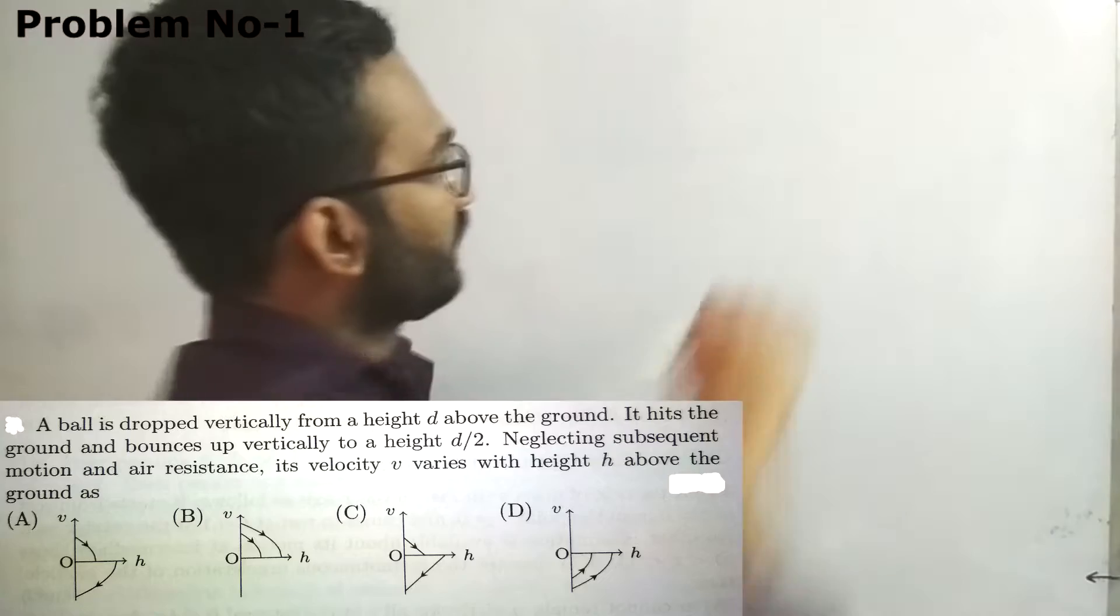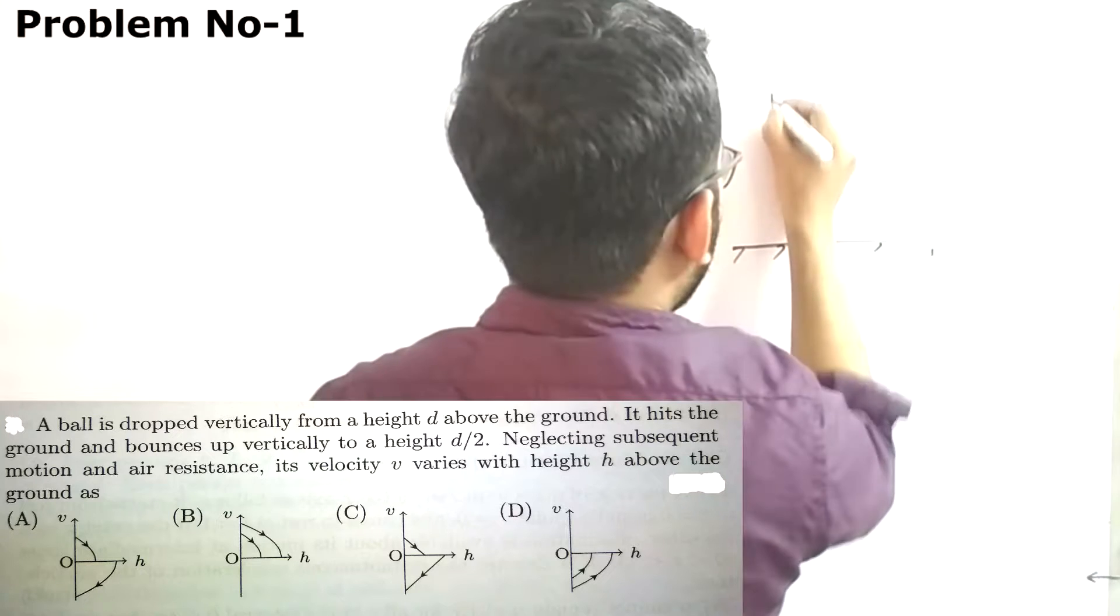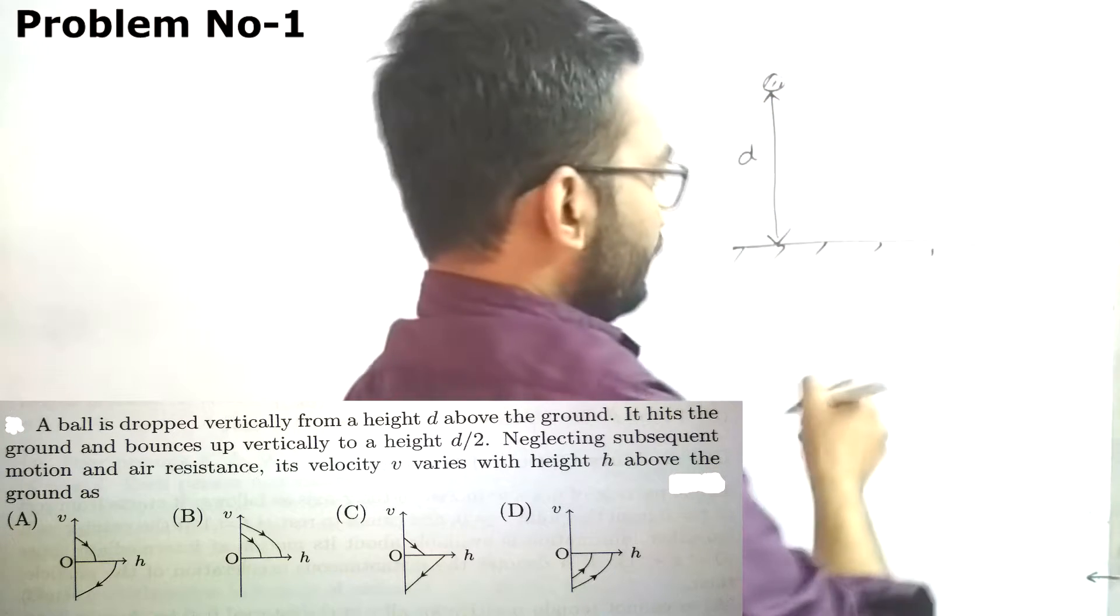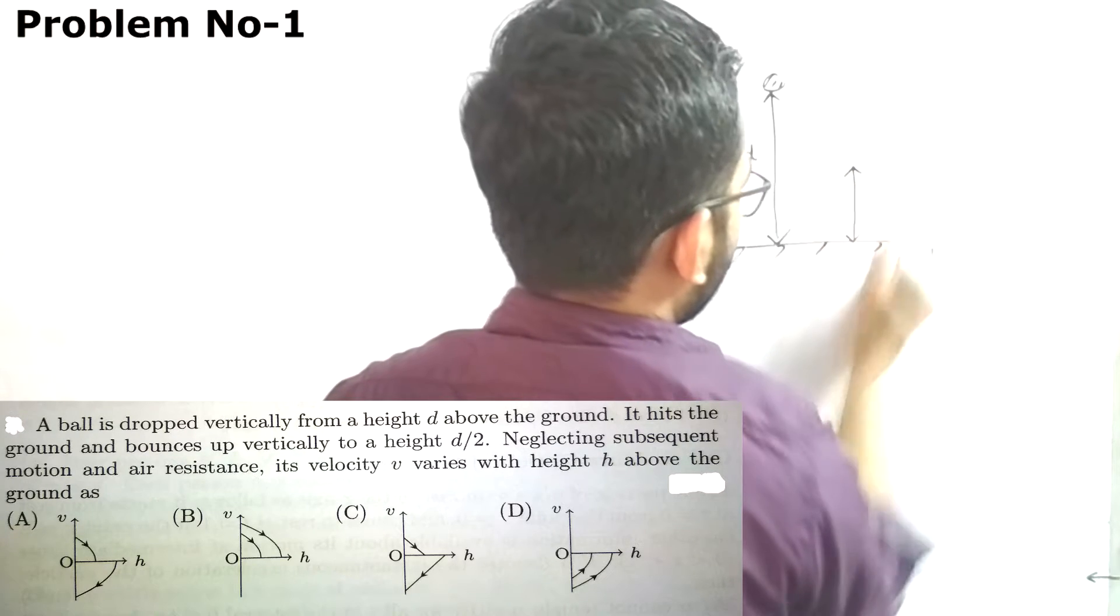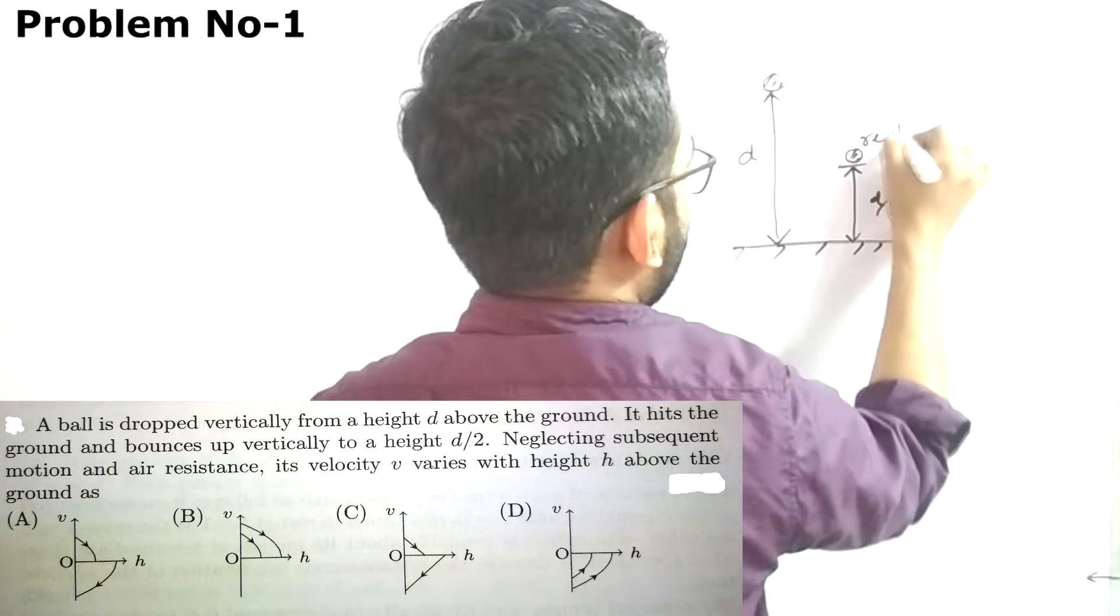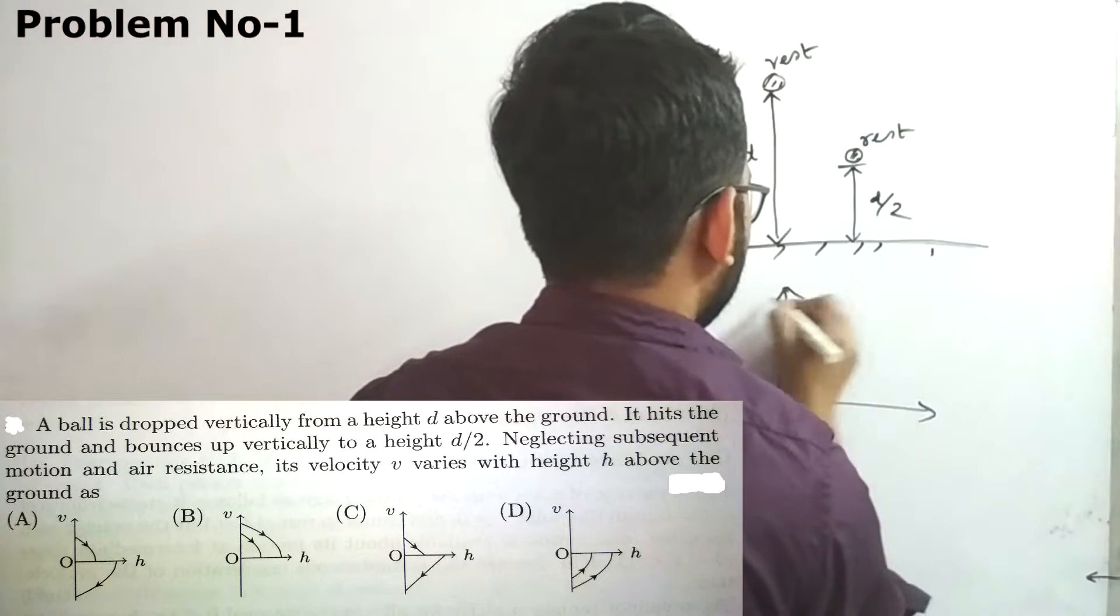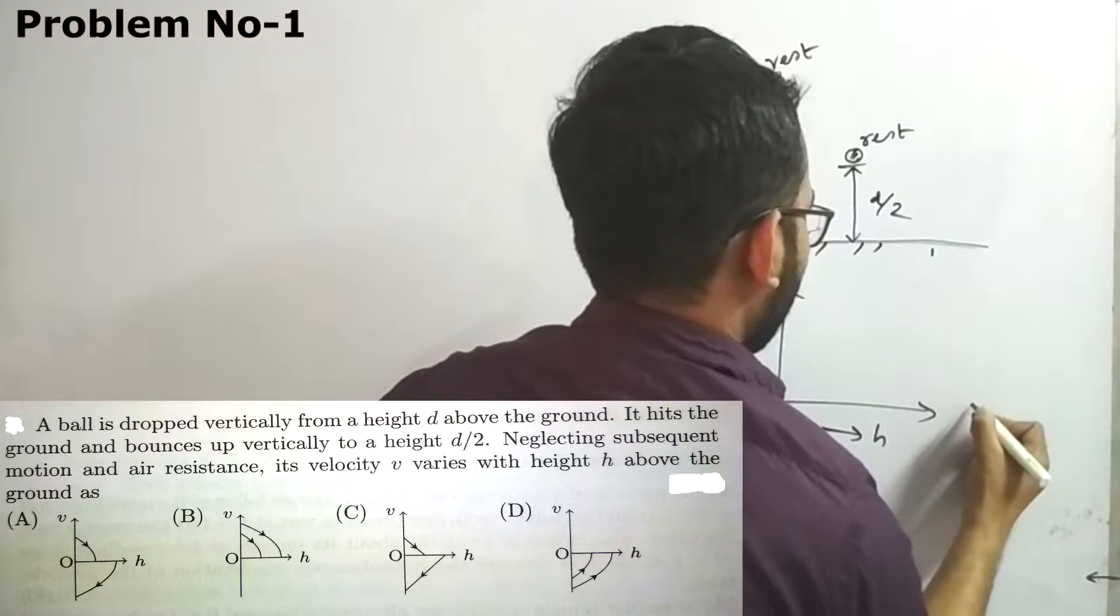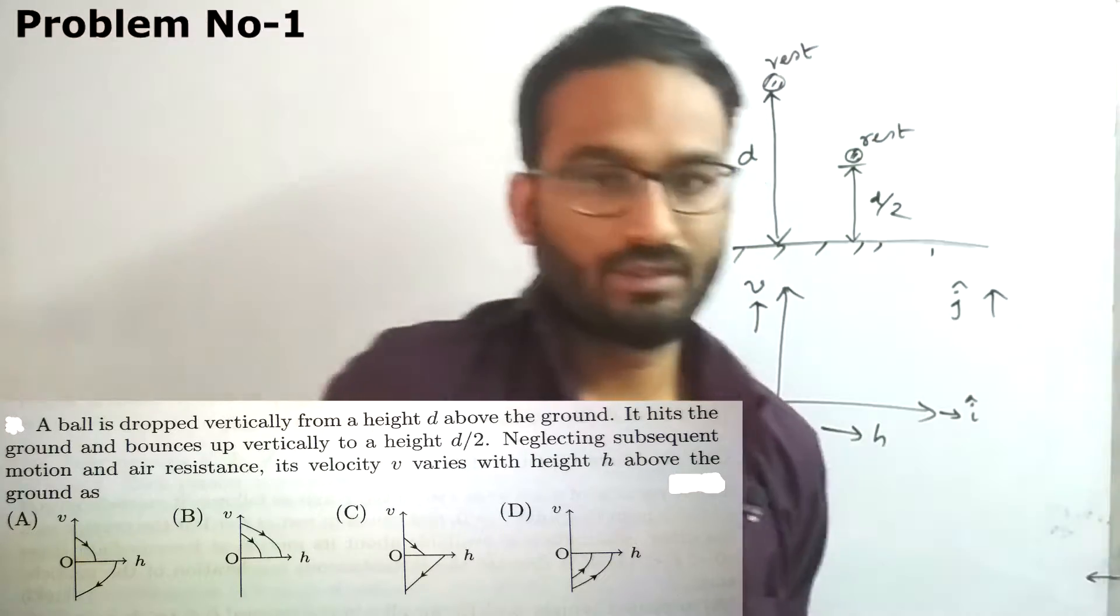Let's understand the configuration first. This is the ground, and you have a ball at height d. You drop the ball, and after bouncing off the ground, it traverses a distance of d/2 and comes to rest. We need the velocity profile—velocity versus height. This is the height h direction, and this is the j-cap direction in the upward direction.